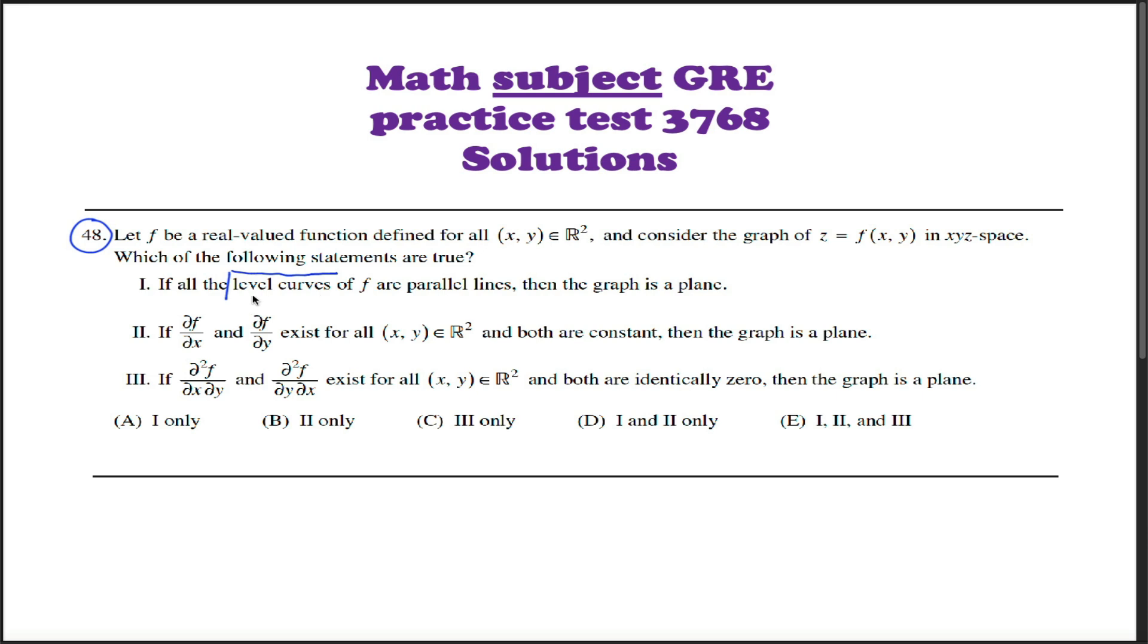First off, when we talk about level curves, maybe think topographic map. That's helpful to me anyways. If anyone else does some hiking, you might be able to picture it that way. So think about a line anywhere the height of the graph is equal to a given value, and then the question says if those lines are all parallel, is the graph necessarily a plane?